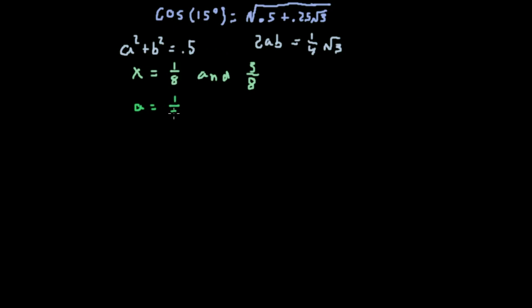So now if x is equal to a squared, then a is equal to the square root of 1/8 and the square root of 3/8. The square root of 1/8 is the same thing as 1/2 square root of 1/2, which is the square root of 1/2 over 4.